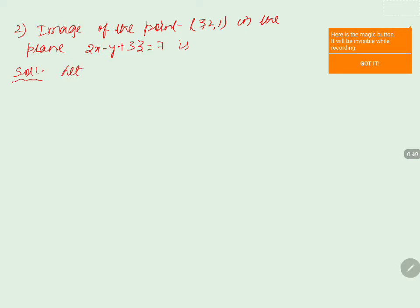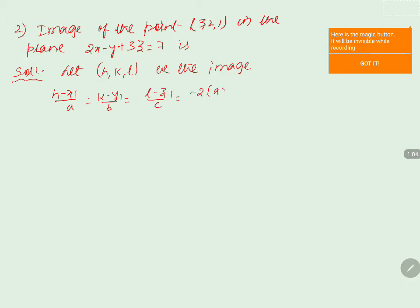We assume (h, k, l) to be the image. If we take this point as the image, then we use the formula: h minus x1 by a equals k minus y1 by b equals l minus z1 by c equals minus 2 times (a·x1 plus b·y1 plus c·z1 plus d) divided by (a² plus b² plus c²).